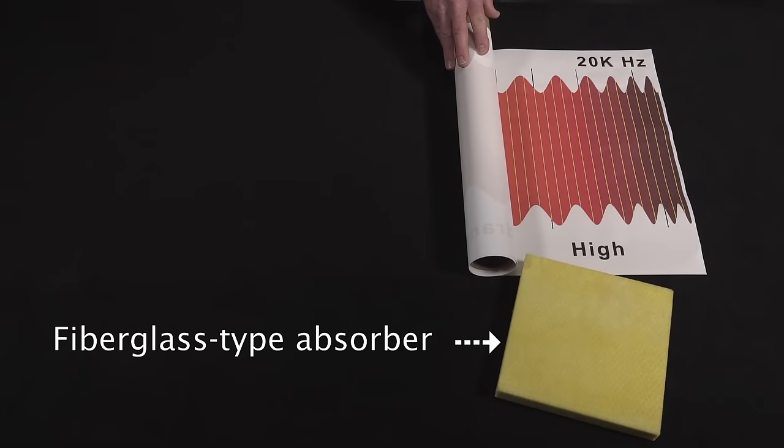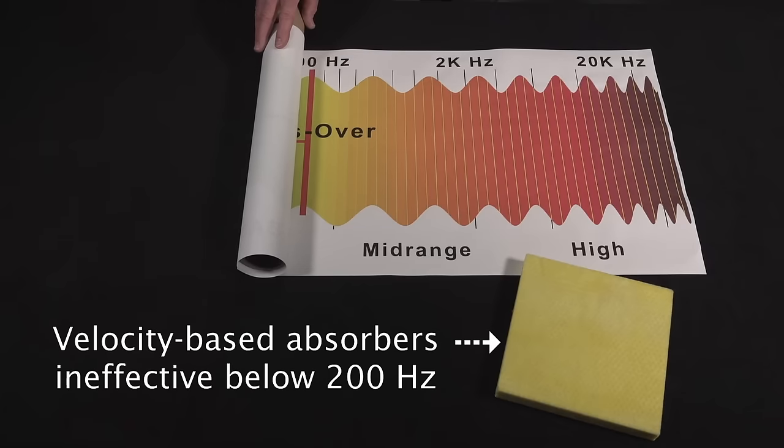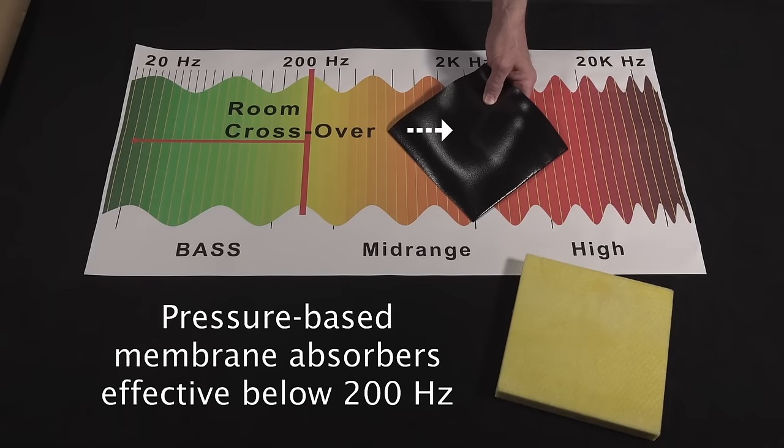But fiberglass-type absorbers, typically used to absorb mid and high frequencies, don't work below 200 Hz because they're velocity-based. However, our pressure-based membrane absorbers are effective below 200 Hz.